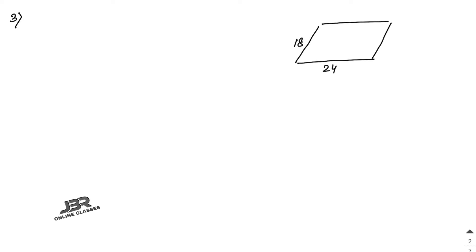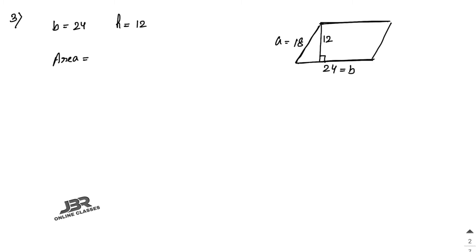Number 3: Two adjacent sides of a parallelogram are 24 and 18. If the distance between the longest sides is 12, find the distance between the shorter sides. Here base equals 24, and the perpendicular height equals 12. The area of the parallelogram is base into height, so 24 into 12 square centimeters.